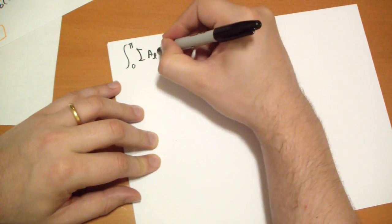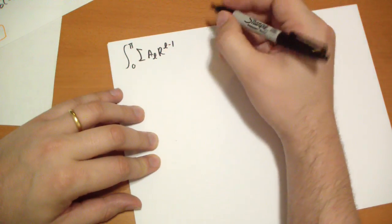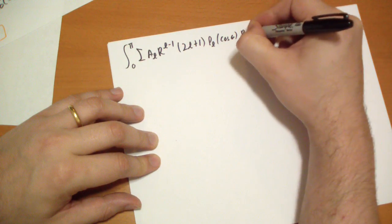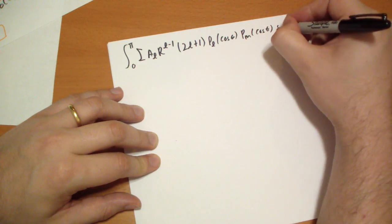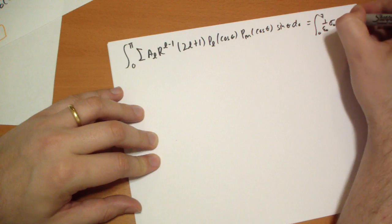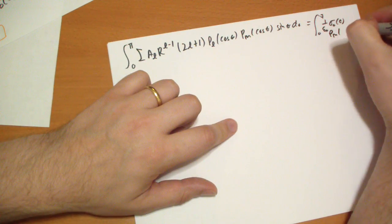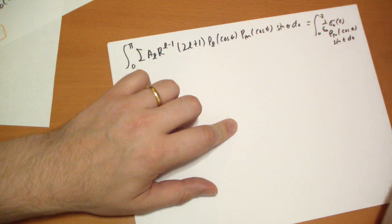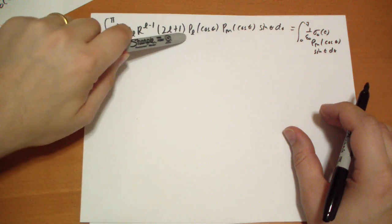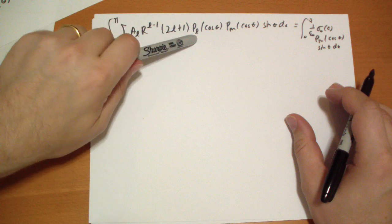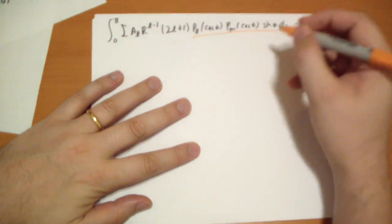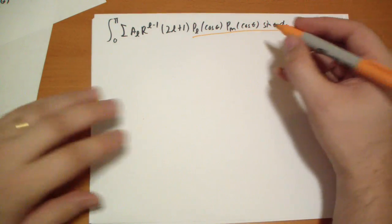What I'm going to do first is we're going to put A_L all by its lonesome self. We can't do that yet. So let's do Legendre's polynomial trick. We're going to take the integral from zero to pi of the sum of A_L*capital R^(L-1) times 2L+1 times P_L, and this is of cos theta, and we're going to multiply by P_M(cos theta)*sin(theta)*dtheta.